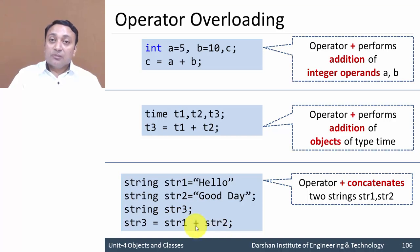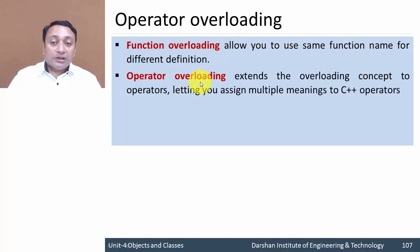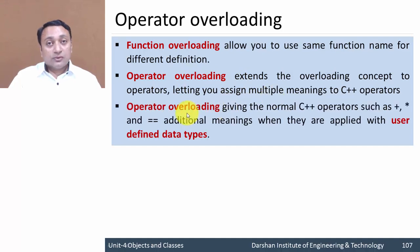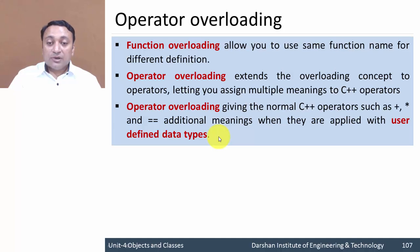Let us understand the concept in more detail. We already know function overloading allows you to use the same function name for different definitions. Same way, operator overloading extends the overloading concept to operators and allows us to assign multiple meanings to C++ operators. Operator overloading provides additional meanings to operators like plus, multiplication, and equal-equal with user-defined data types, because the compiler knows these operations with predefined or primary data types. If you want to use these operators with user-defined data types, you need to define the procedure for that.